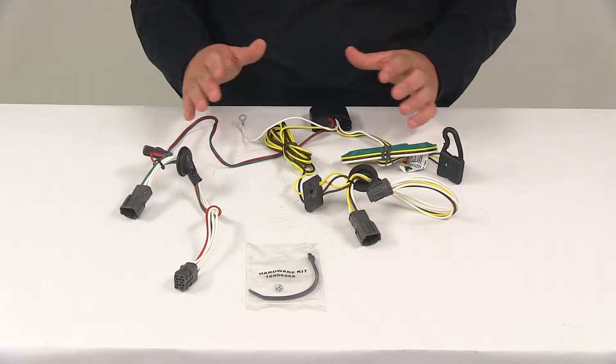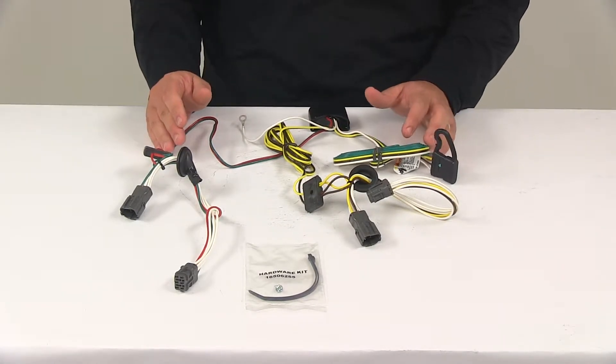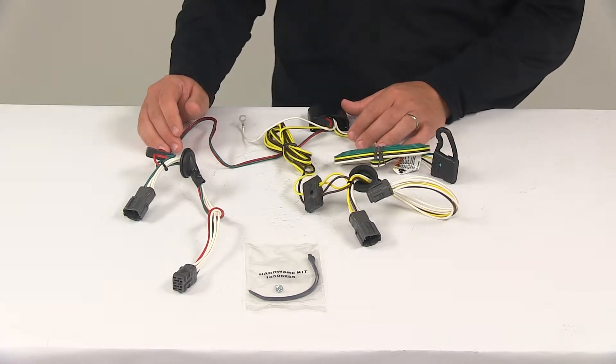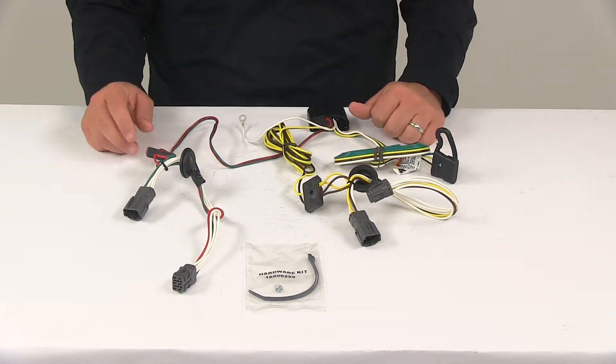The system is designed to connect quickly and easily. You don't have to worry about cutting or splicing any wires. Locate your connection points behind the vehicle's tail lights and plug in your connectors.